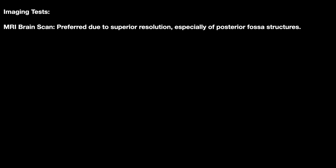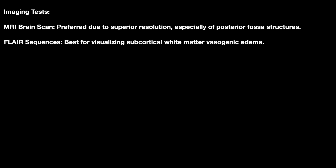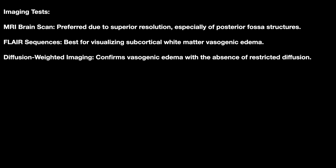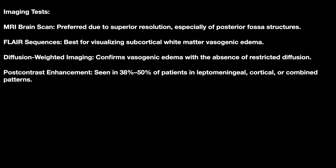The first step is imaging. The most classical way of diagnosing PRES is an MR scan, preferred due to superior resolution especially of the posterior fossa structures. A FLAIR sequence is best for visualizing subcortical white matter vasogenic edema. Diffusion-weighted imaging confirms vasogenic edema with the absence of restricted diffusion. Contrast enhancement is seen in 38% to 50% of patients in leptomeningeal, cortical, and combined patterns.